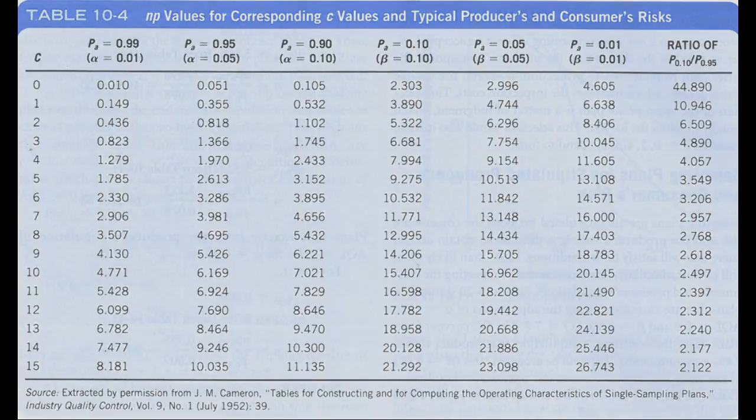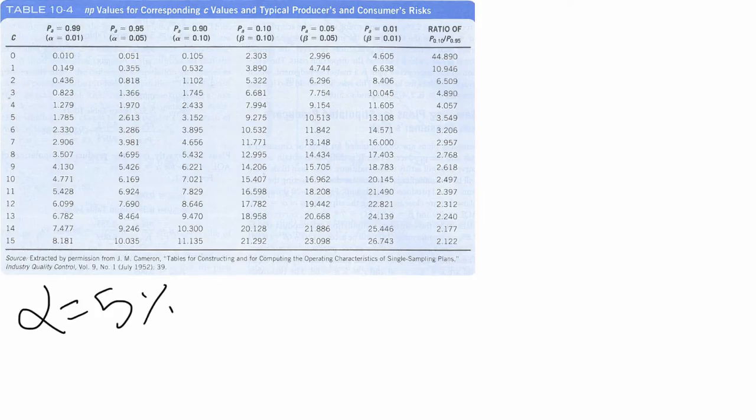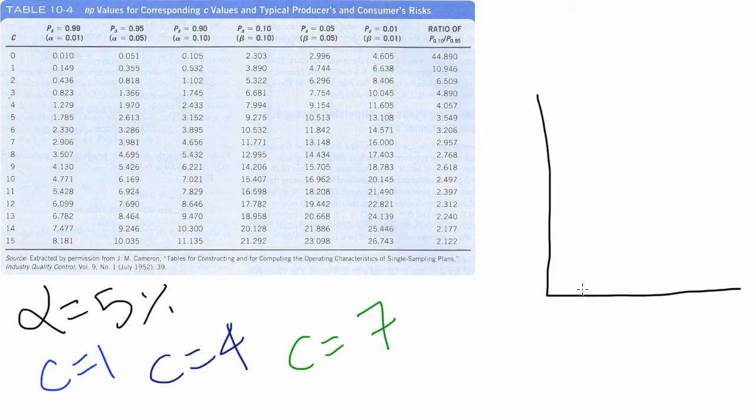It gives us the np values for given alpha or beta values and given c values. So, let's determine an example in which case we have a producer's risk or alpha of 5% and we want to determine how many samples are required when we have acceptance numbers of 1, 4, or 7.